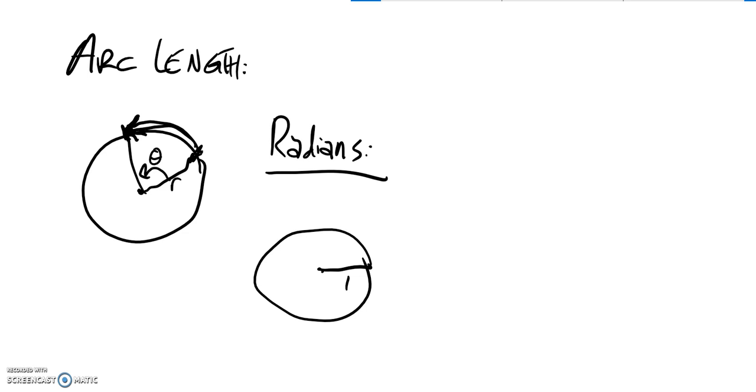So the distance around this is 2 pi. So the arc length for this full circle with a radius of 1 is 2 pi.